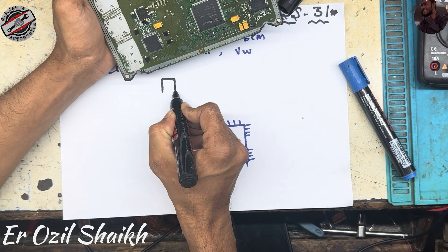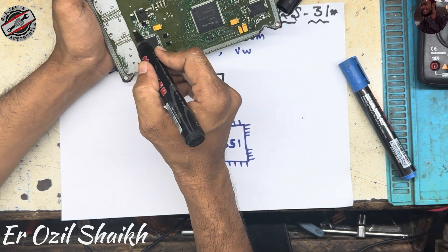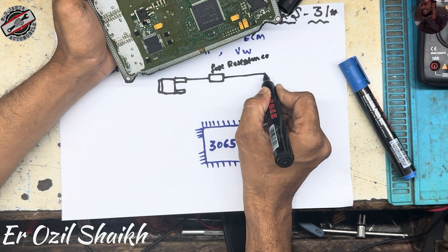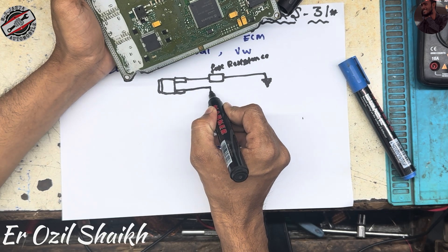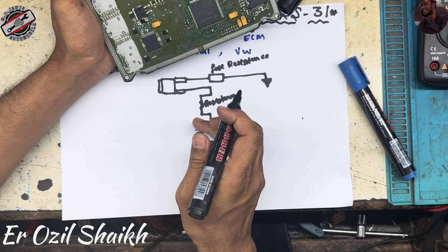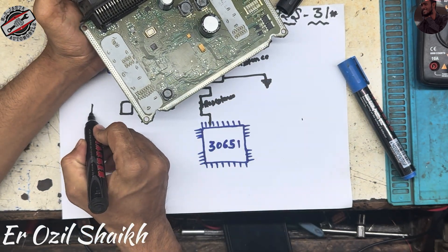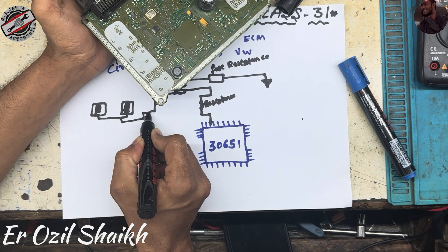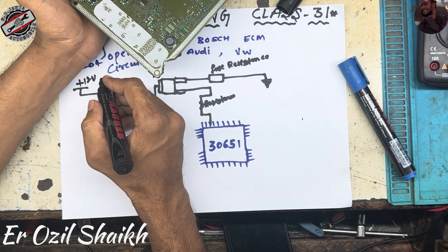You can see this is the IGBT. Connected to it is a fuse resistance, and this is connected to ground. This one comes through one resistance to the injector IC, and this will go to the two coils. The coils have copper winding inside, and one side is connected to the drain and the other side is connected to 12 volts — which is the after-relay voltage.